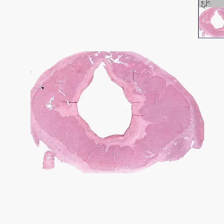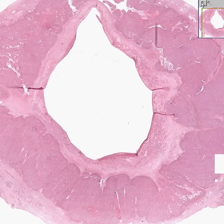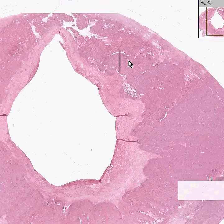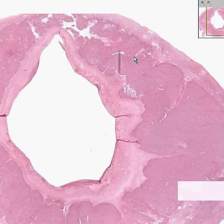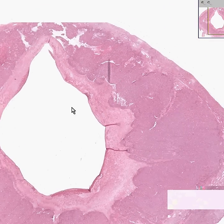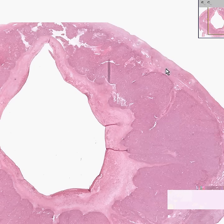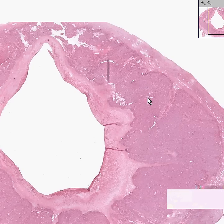After ovulation, that same follicle then develops into a structure called the corpus luteum, which can be thought of as a Graafian follicle after ovulation.